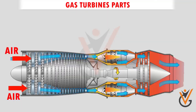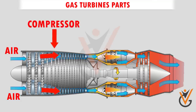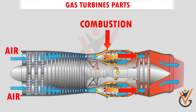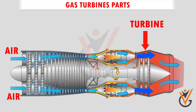Gas turbines have three important parts: a compressor to compress the incoming air to high pressure, a combustion area to burn the fuel and produce high-pressure, high-velocity gas, and a turbine to extract energy from the high-pressure, high-velocity gas flowing from the combustion chamber.